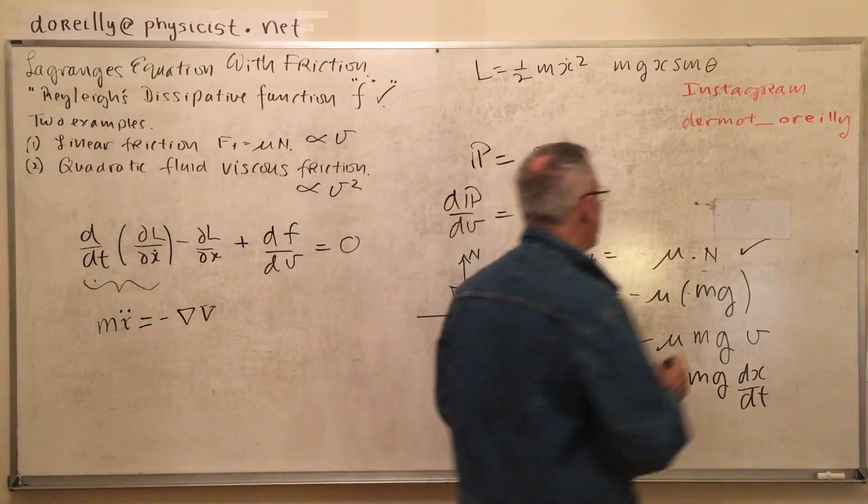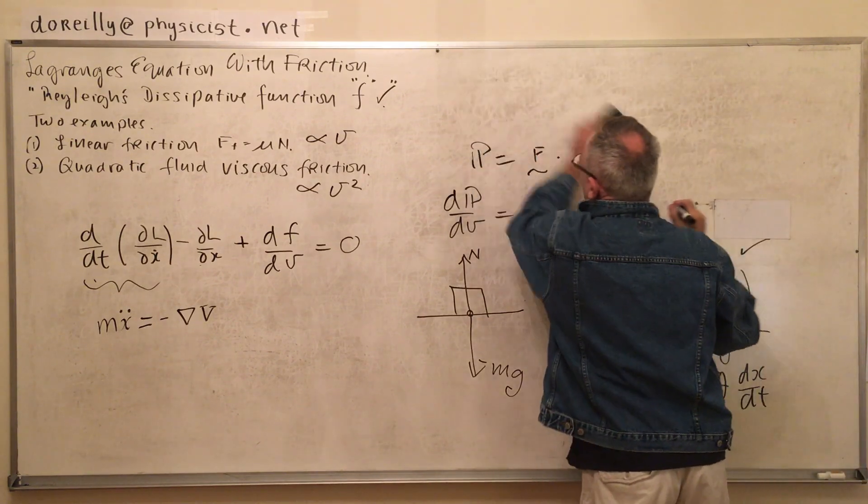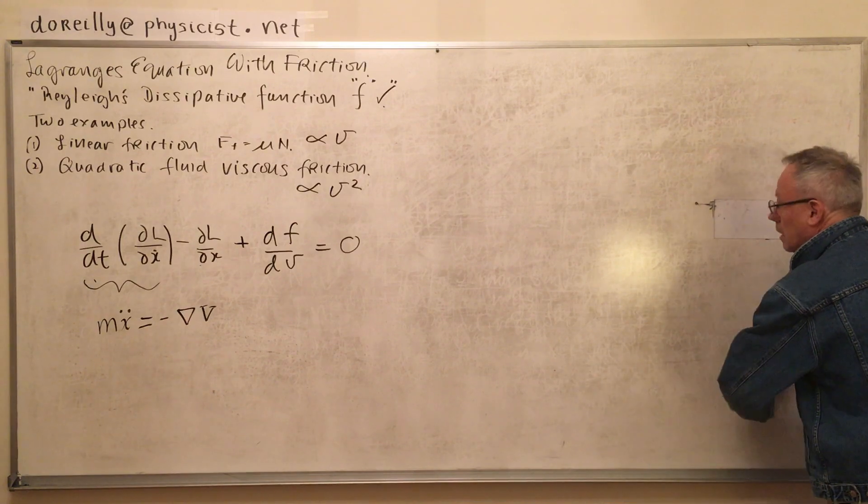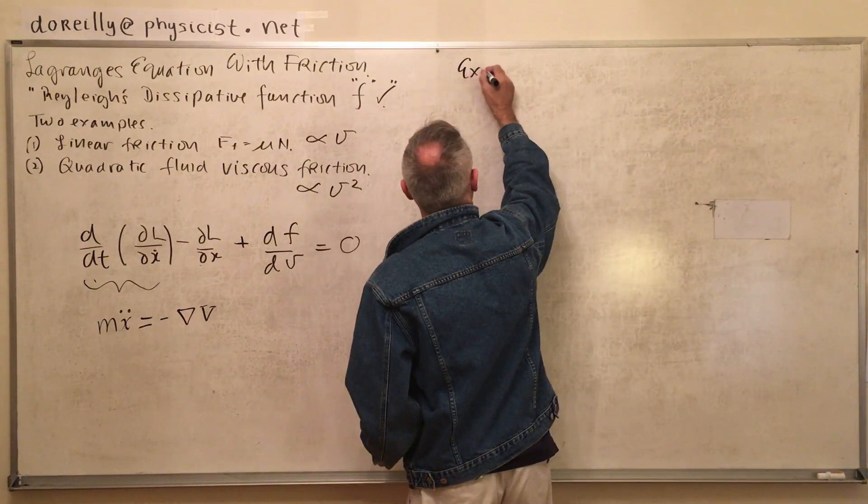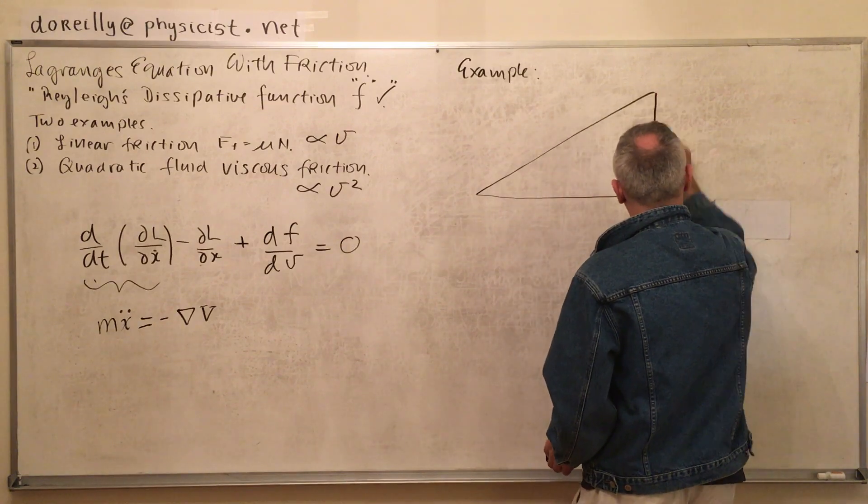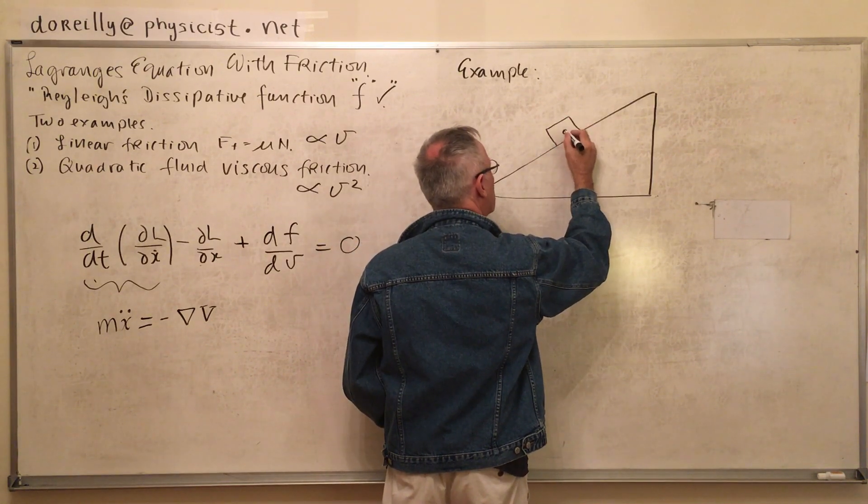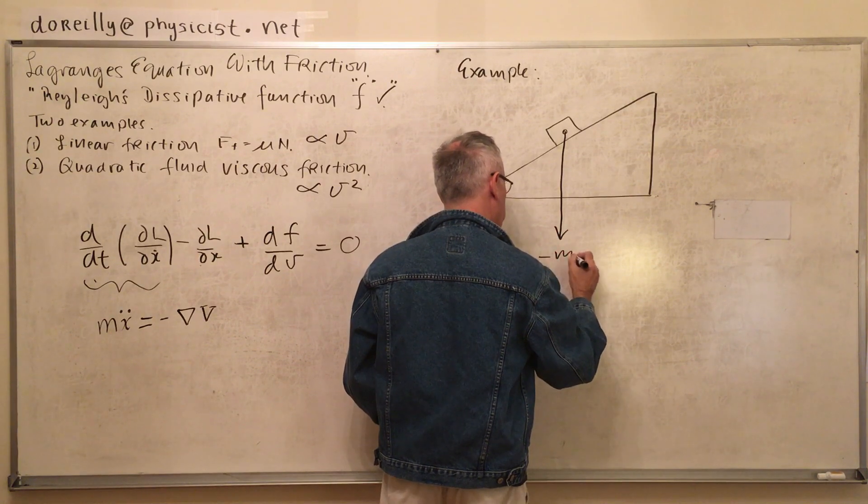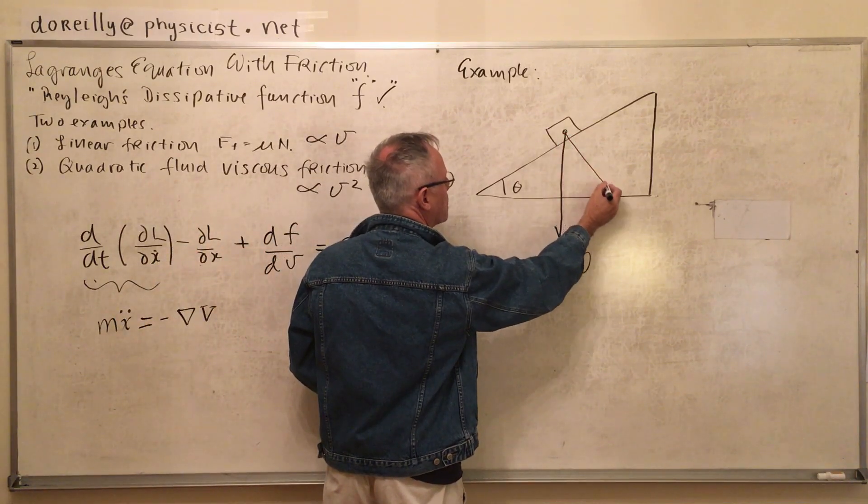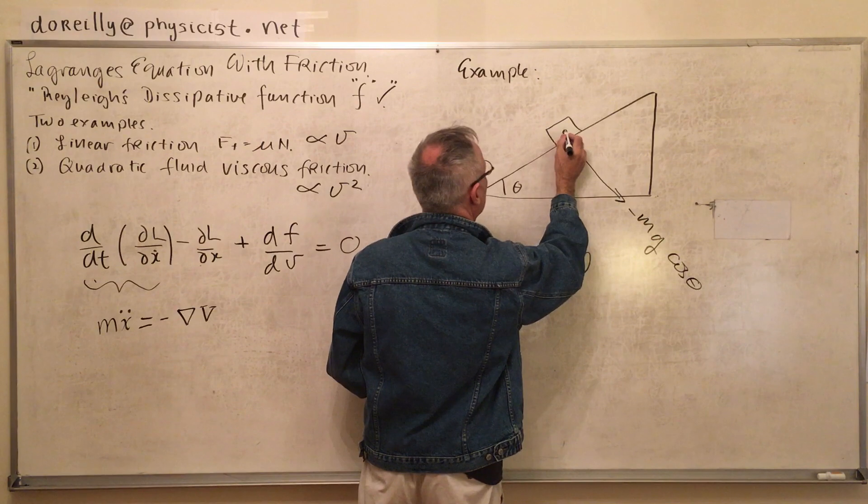We did the problem of a mass experiencing friction free to move down the slope at an angle theta to the horizontal. This is going to have two components of weight.